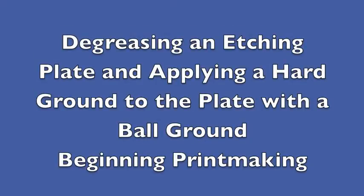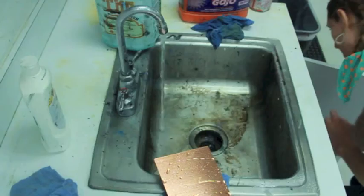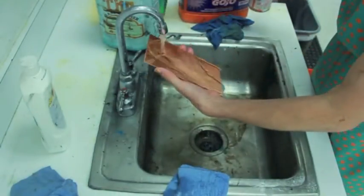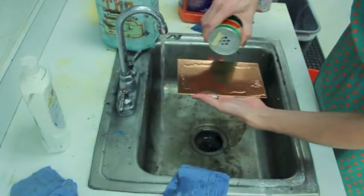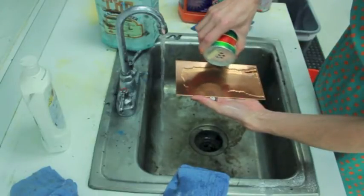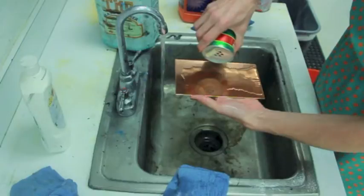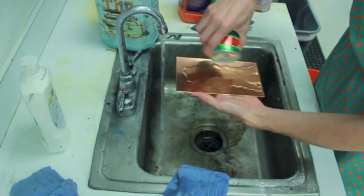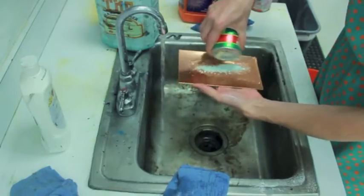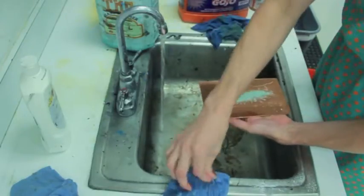For this tutorial I'm using a copper plate but the process is the same for zinc plate. First of all we're going to degrease the plate. To degrease the plate I'm using Clorox bleach cleaning powder. At UT we use laundry detergent. Both products work well and degrease your plate well, so either is fine.